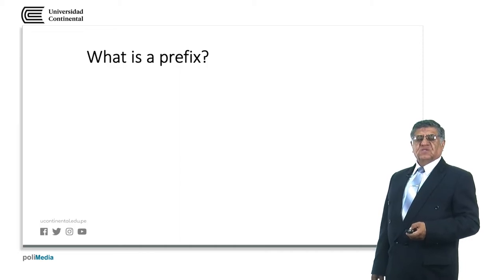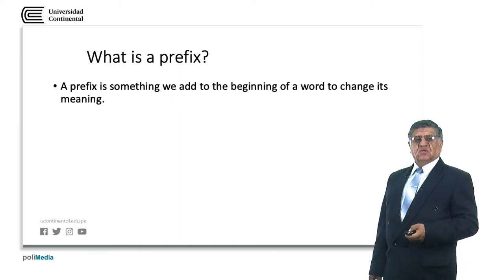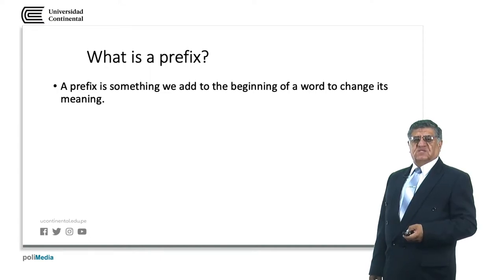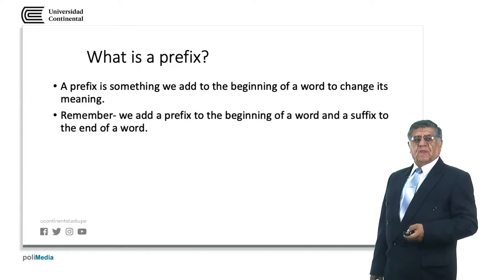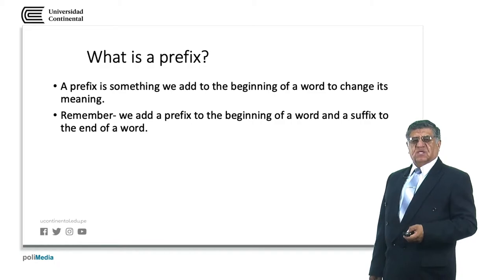What is a prefix? A prefix is a particle that goes at the beginning of a word. Most of the time it changes, emphasizes, or gives more information about its meaning. For example, 'happy' becomes 'unhappy' — happy is affirmative and unhappy is negative. We add a prefix to the beginning and a suffix to the end of a word.